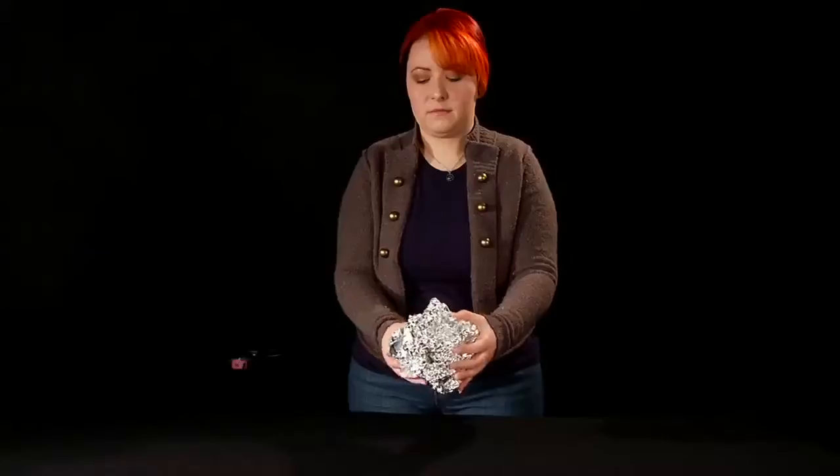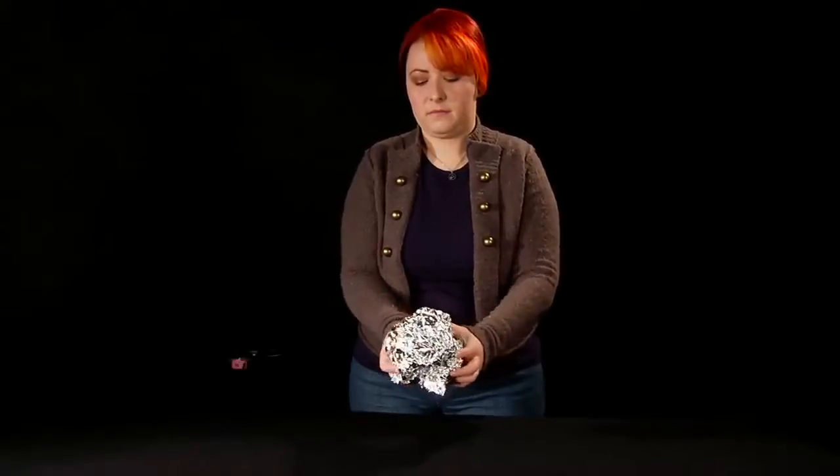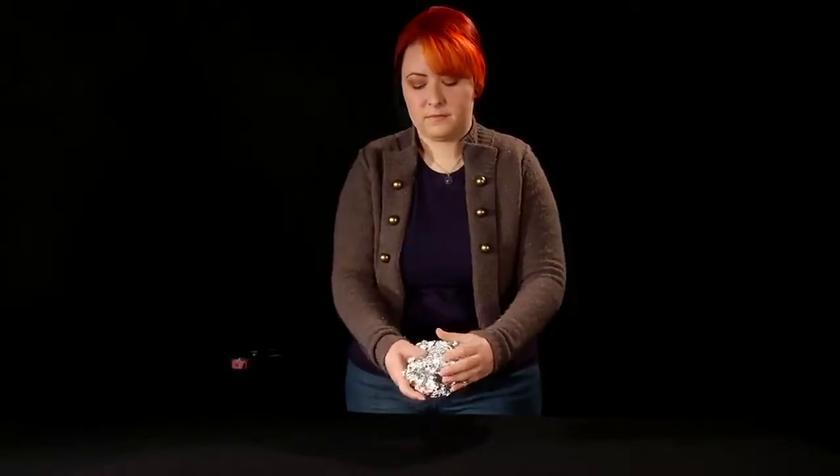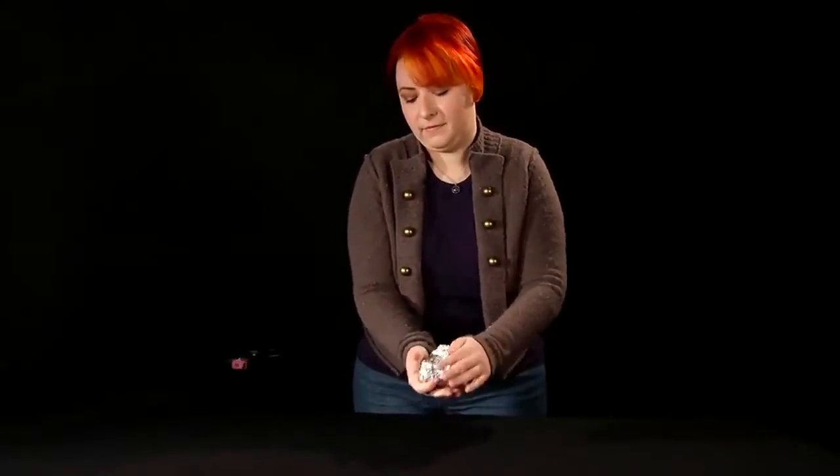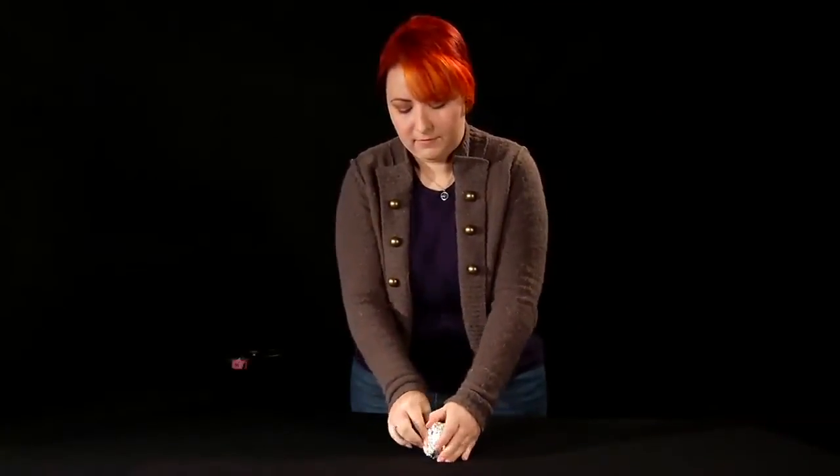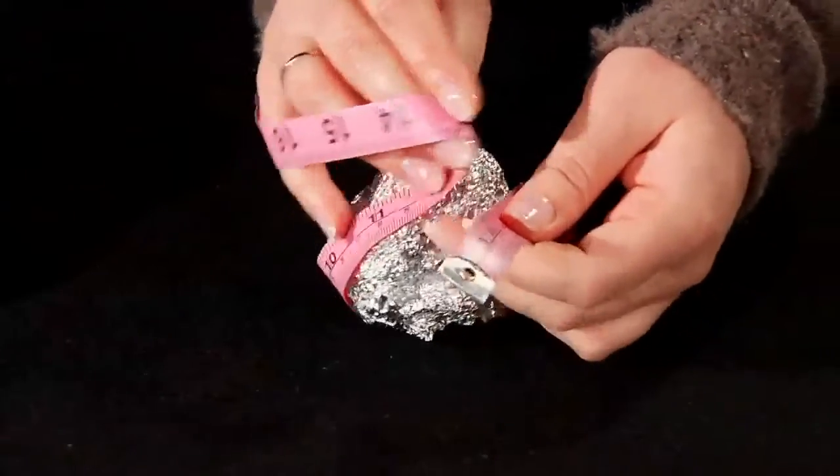You'll repeat those steps a few more times, crushing down the foil ball about an inch more between measurements. For your final measurement, crush the ball as much as you possibly can while keeping it round. Take one final measurement of its circumference and weight.